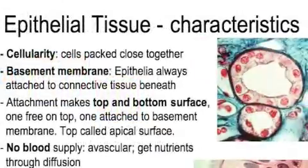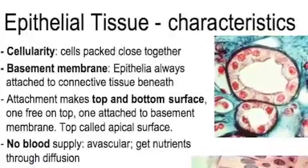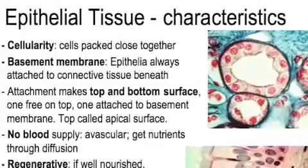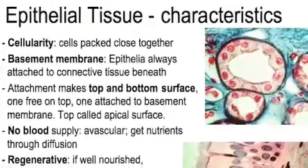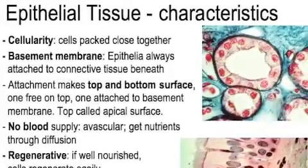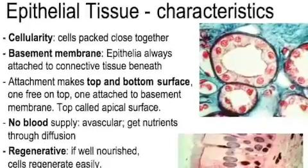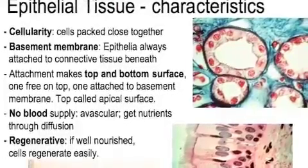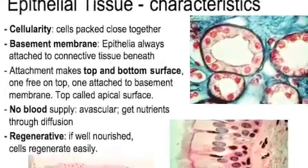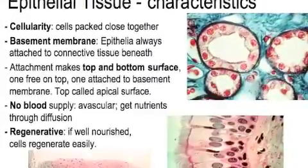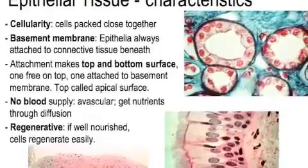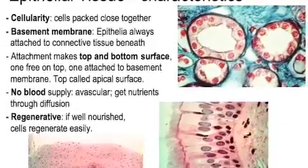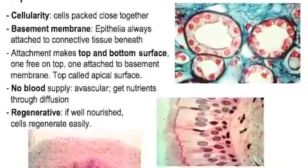Now let's describe the characteristics of epithelial tissue. Its cells pack close together — we call that cellularity. It is always attached to connective tissue underneath it; the basement membrane connects the epithelial tissue to the connective tissue. This attachment makes the top and bottom surfaces different from one another. The top surface is called the apical surface. Epithelial tissue has no blood supply — it is avascular and gets its nutrients through diffusion. If well nourished, its cells regenerate easily.